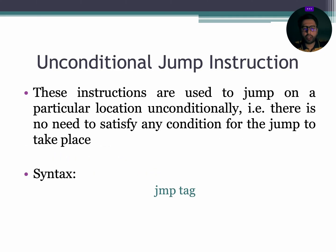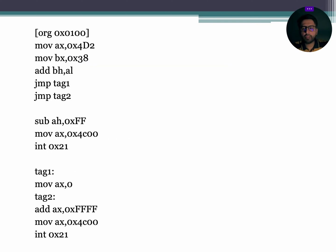Unconditional jump instructions are used to jump to a particular location unconditionally, i.e., there is no need to satisfy any condition for the jump to take place. To understand the concept of unconditional jump instructions, let's try to run this assembly language program.